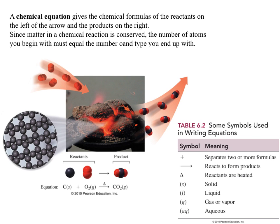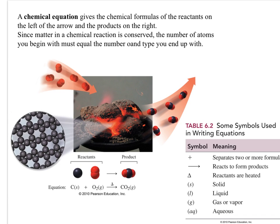A chemical equation gives the formulas of reactants on the left-hand side of the arrow and products on the right-hand side. Something to keep in mind: the law of conservation of matter says matter can't be created or destroyed — it has to be equal. So if I have 10 grams of reactant, I have to have 10 grams of total product. The same thing when counting: if I have one carbon on the left-hand side, I have to have one carbon on the right-hand side.